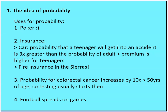Probability for colorectal cancer increases by 10 times at age 50, so testing usually starts then. My brother did actually have colon cancer — he tested a year after he was 50, and luckily he caught it at a good time. These are things considered by doctors when they test you for certain problems. Football spreads on games also involve probable outcomes, which is part of the betting scenario along with poker.